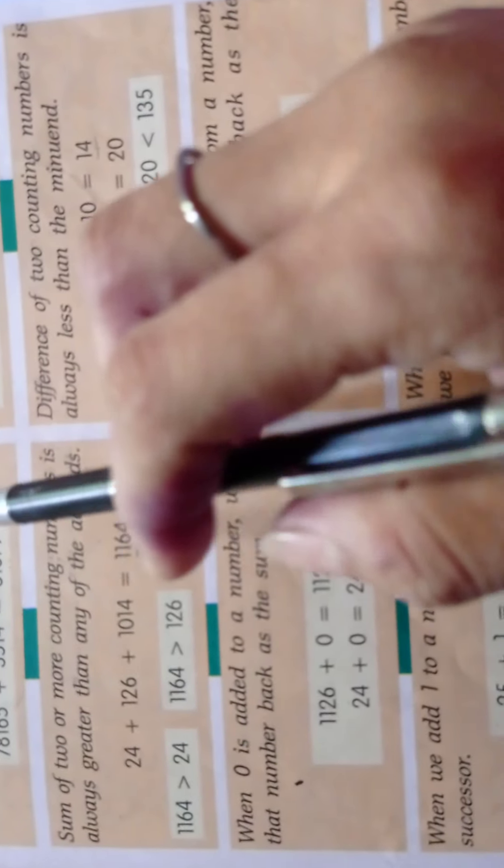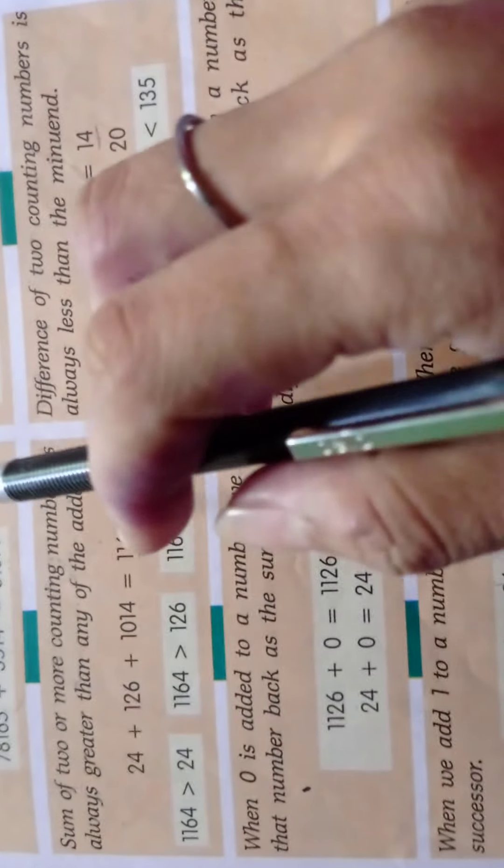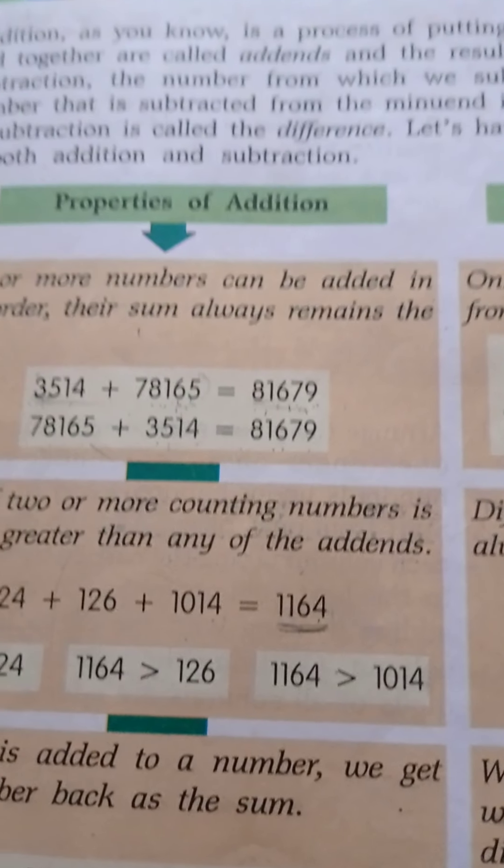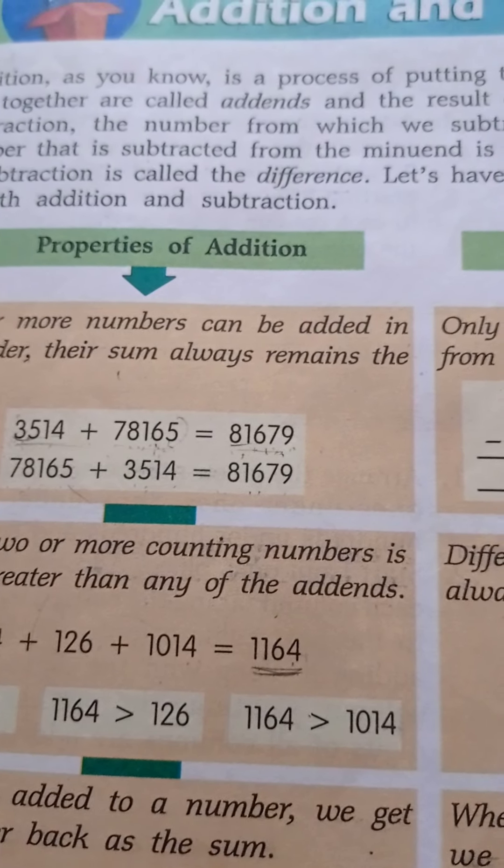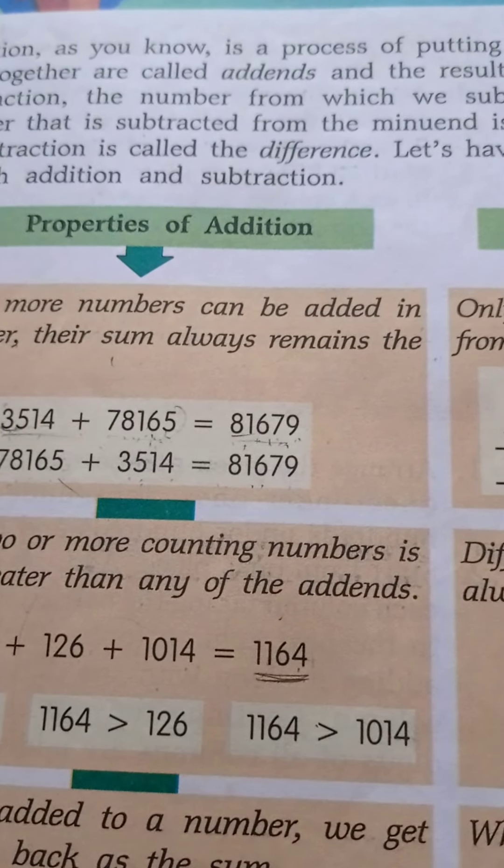Hello students. Today I am going to start a new chapter — Chapter 2: Addition and Subtraction. Addition, as you know, is a process of putting things together. The numbers that we add together are called addends, and the result of addition is called the sum.